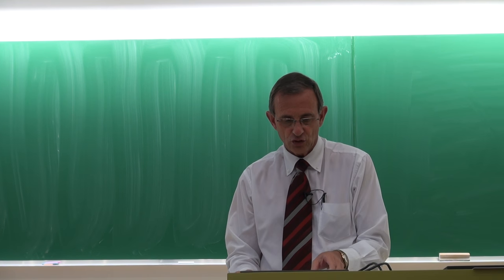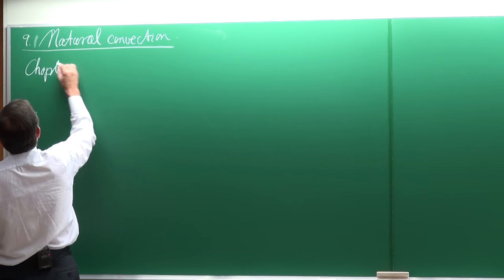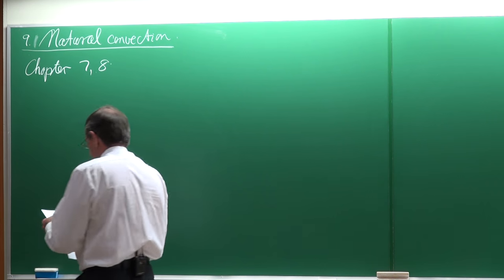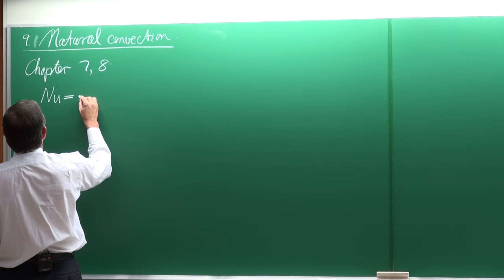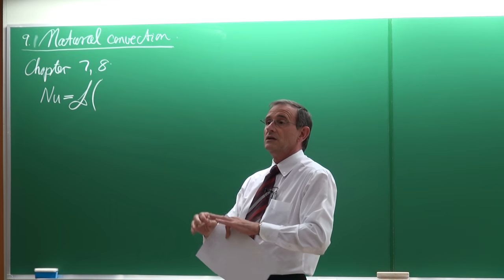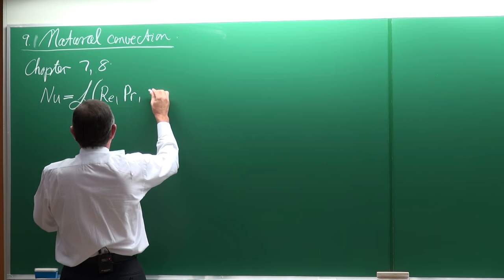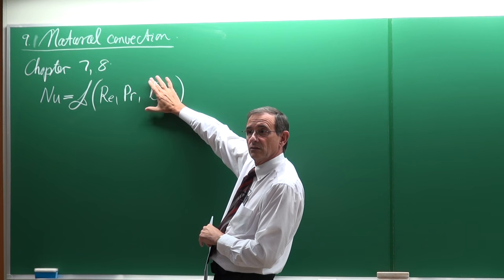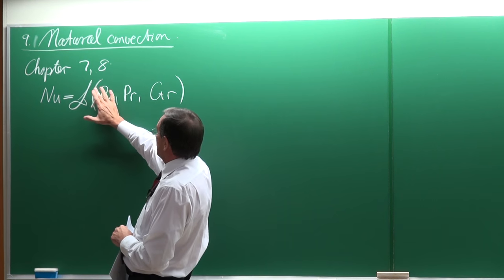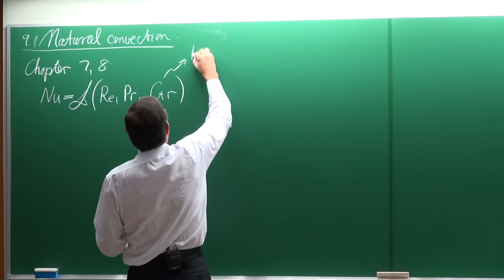Let's continue with natural convection and link it to chapters seven and eight. In those chapters, what I brought to your attention is that it's all about determining the Nusselt number. The Nusselt number in general is a function of the Reynolds number, the Prandtl number, and the Grashoff number. But in chapters seven and eight, the Grashoff number never featured — we only looked at Nusselt as a function of Reynolds and Prandtl numbers.